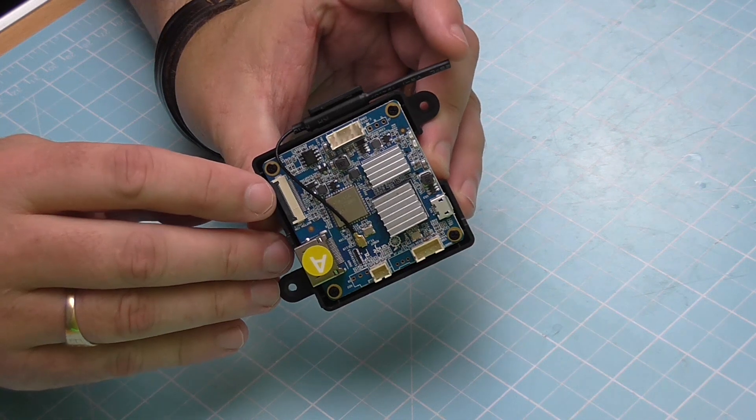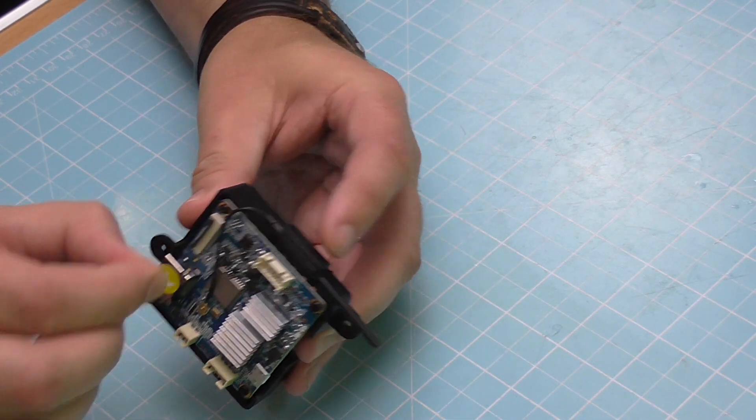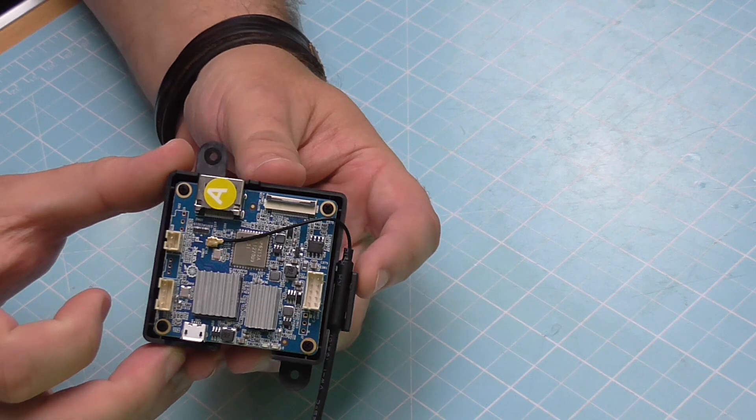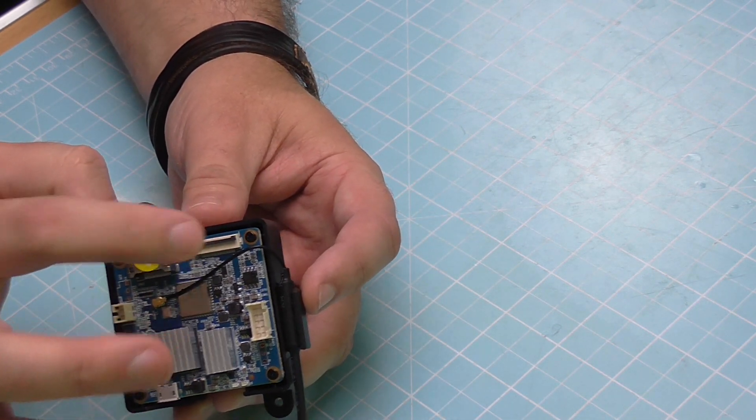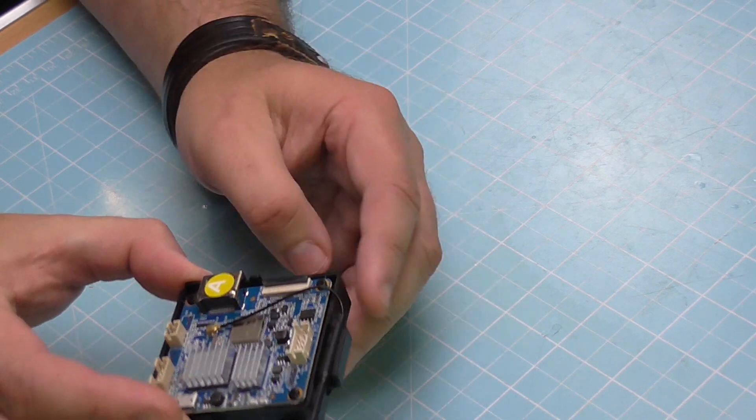But what might be worth doing before we actually put it in is we just need to lift this little black flap up, ready to accept the camera. And you can do that with your finger. It just goes up like that. Can you see that okay? And then when we put the camera in, we'll just be putting it back down again. But I'm going to leave it up.